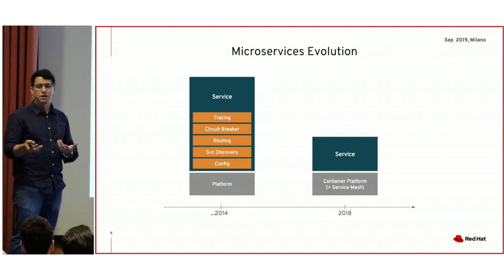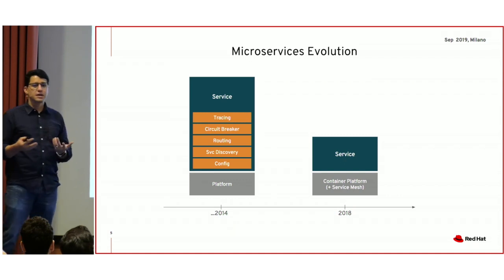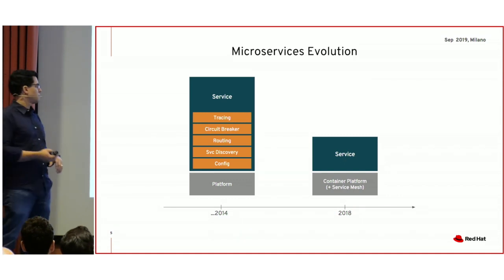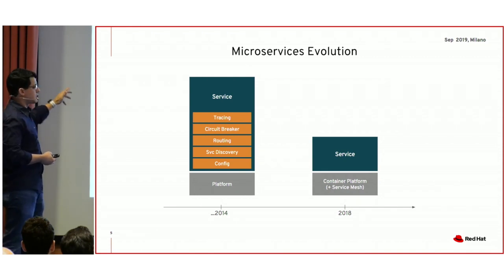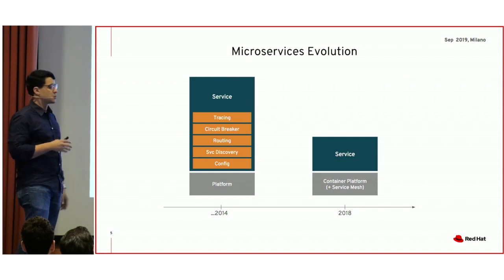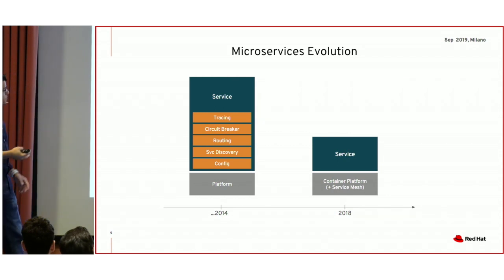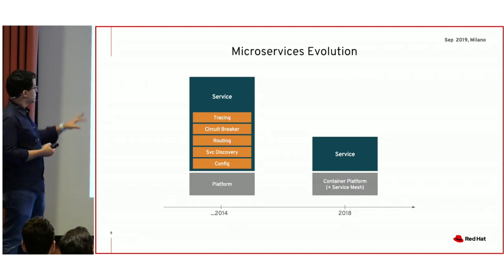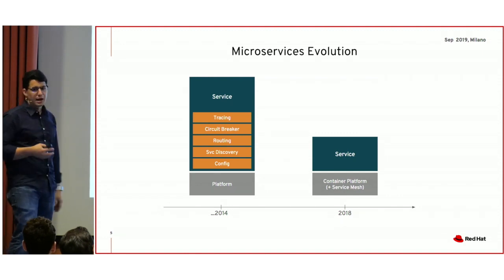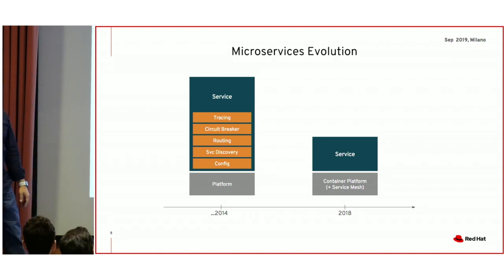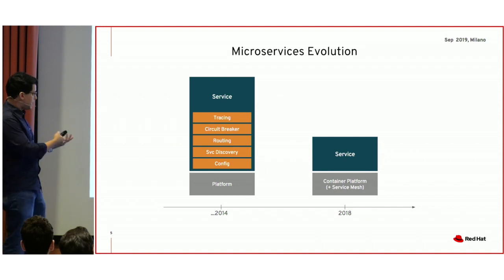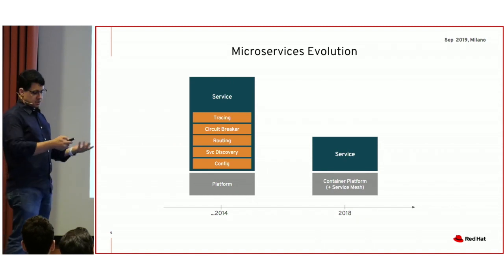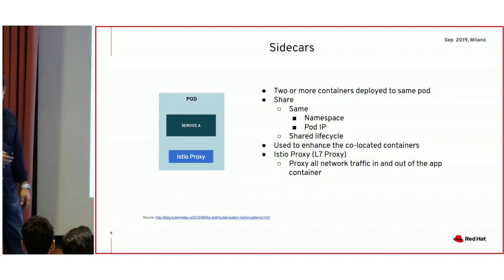It starts to grow in complexity. If you're doing it in Java, you have five, ten other jar files you have to add and all the different frameworks you have to pull in. That was very 2014, and it was also very programming-language-specific. But as things evolved, we started to look into service meshes and how we could delegate some of these concerns — which are more infrastructure-related — to the infrastructure, which is where they actually belong. That's pretty much how we came up with service meshes in the industry.